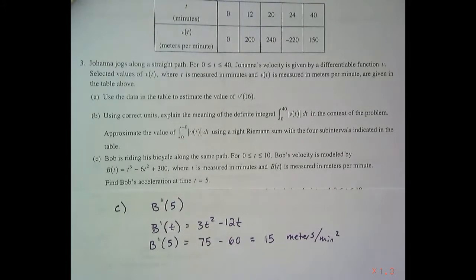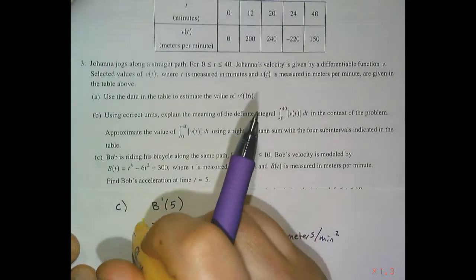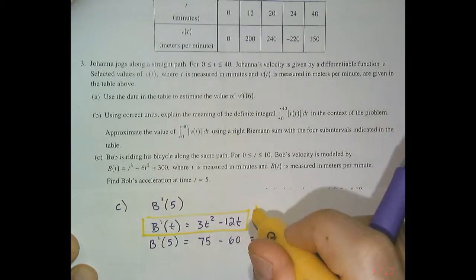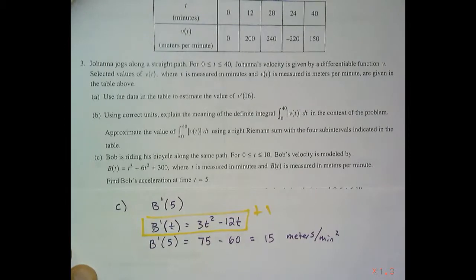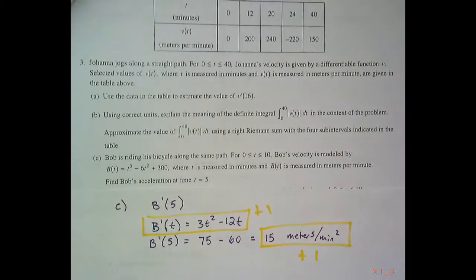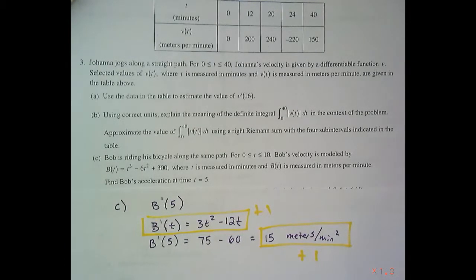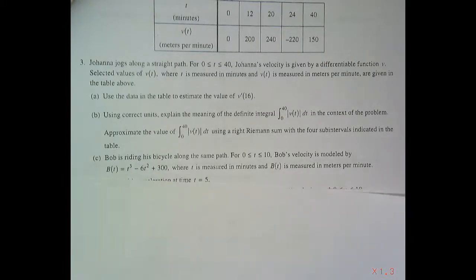This is worth two points. One point if you found B prime of T, recognizing that that represents acceleration. And one point if you successfully evaluated it at time 5. And part D.